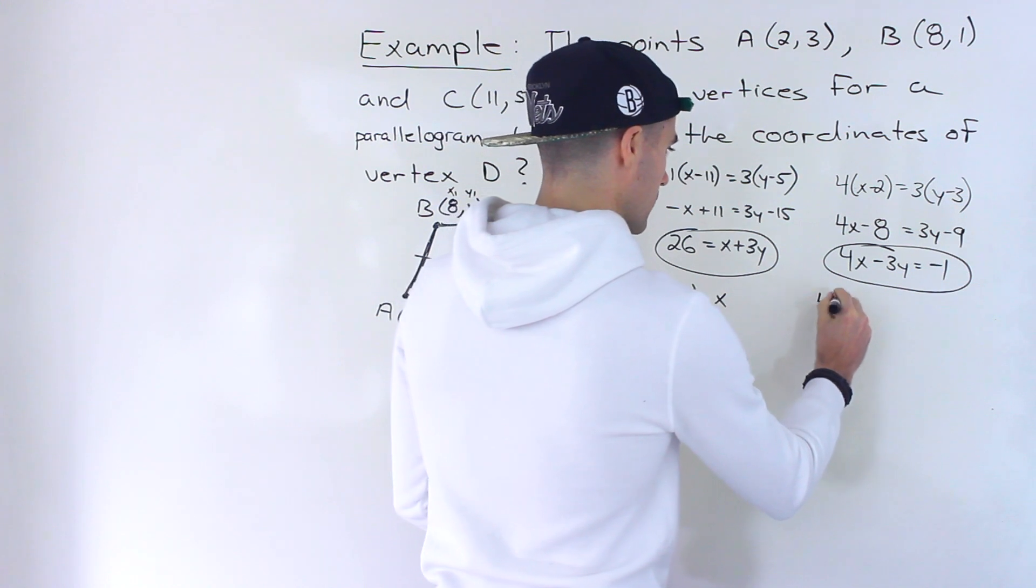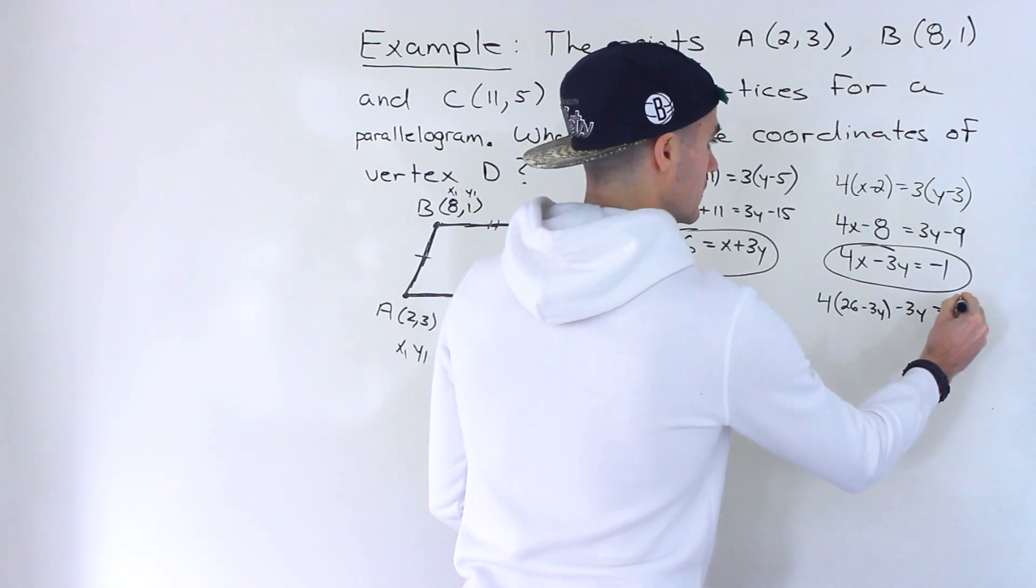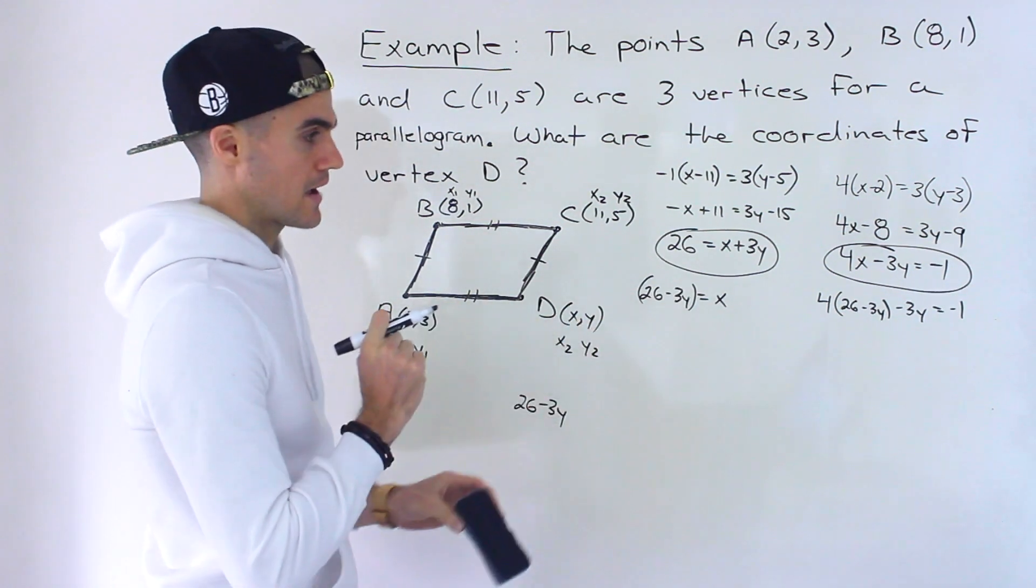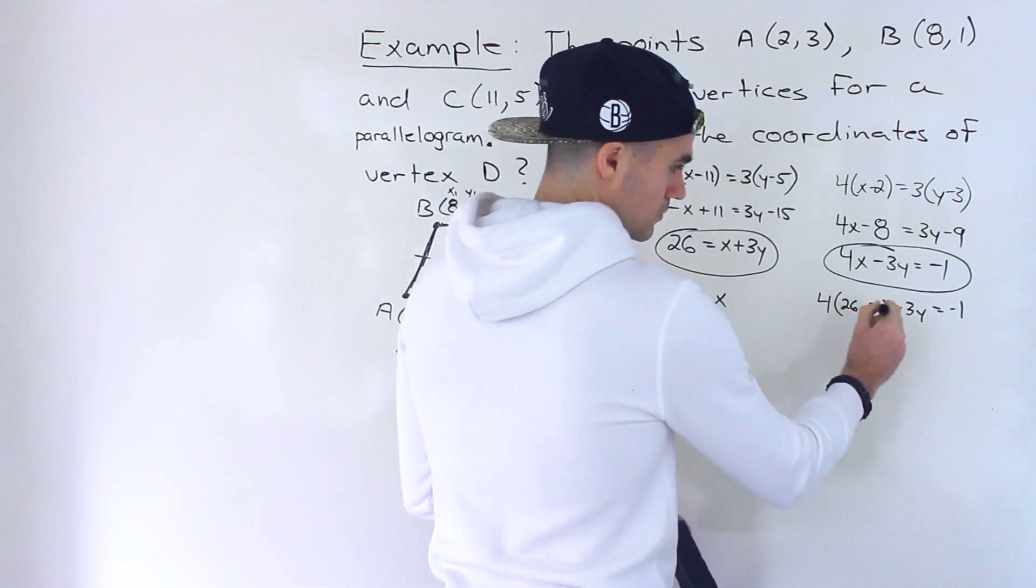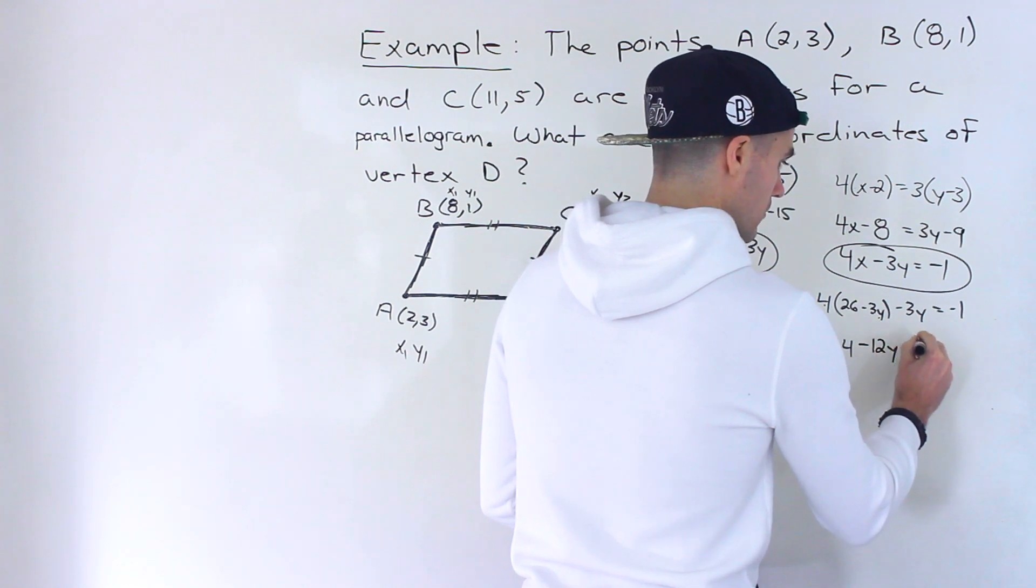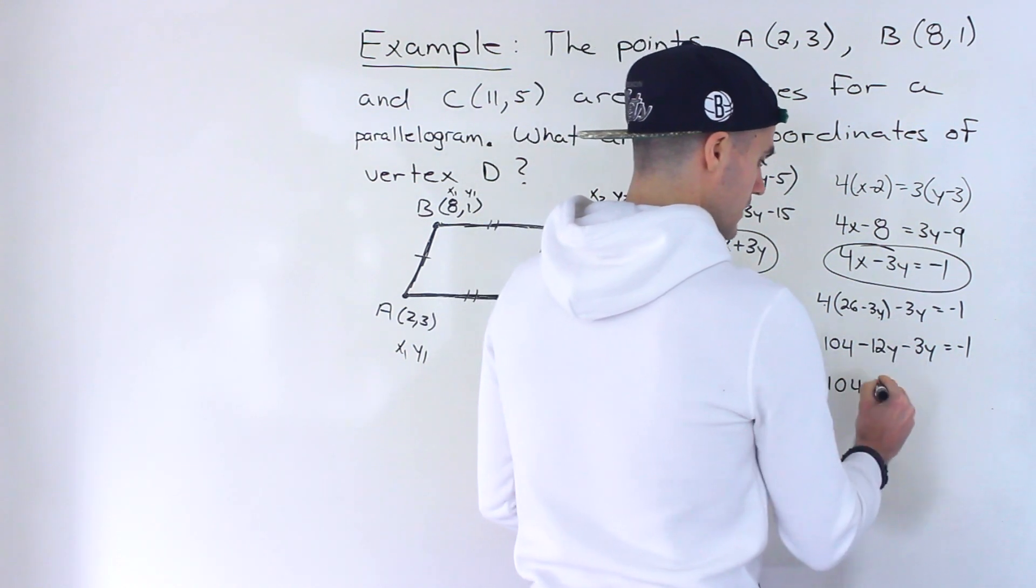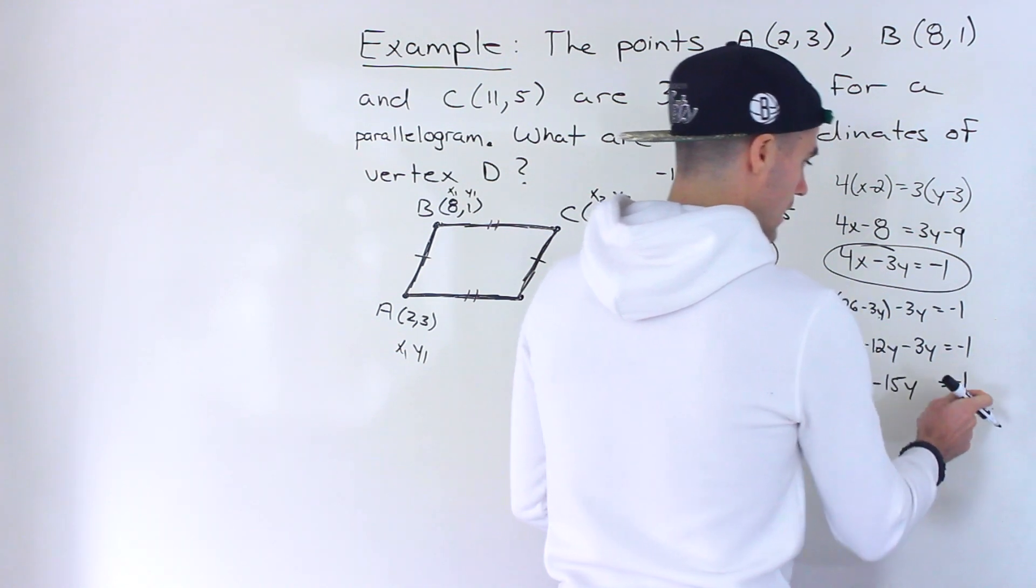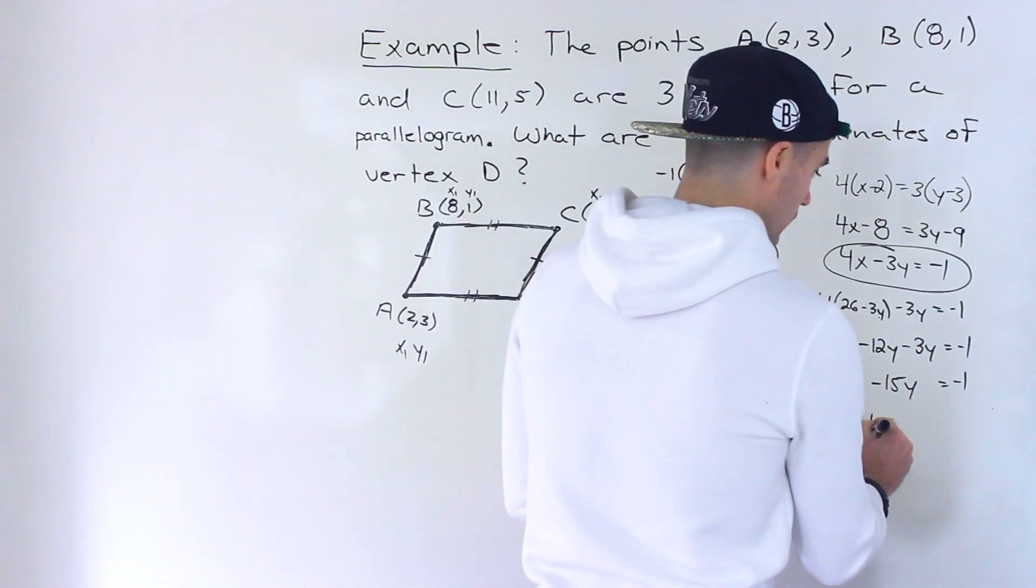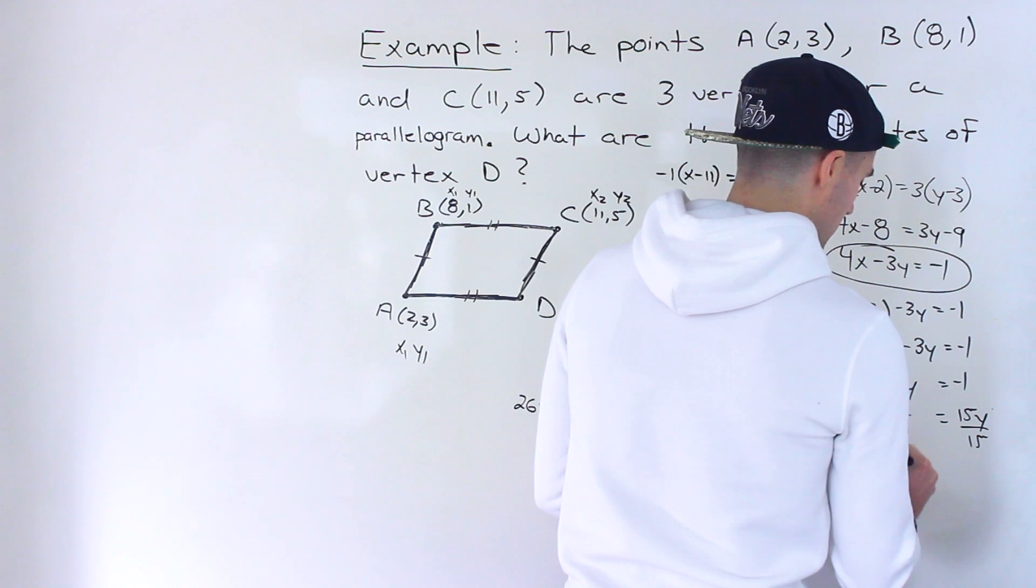So we would end up with 4 bracket 26 minus 3Y minus 3Y equals negative 1. Now you don't necessarily have to go this way. You can go about it a different way. Just make sure you're getting the same X and Y that I'm getting at the end. So from here, we could distribute the 4, 4 times 26 gives us 104. 4 times negative 3Y gives us minus 12Y minus 3Y equals negative 1, like that. This here, these are like terms. That simplifies to minus 15Y.